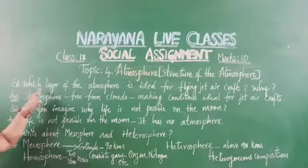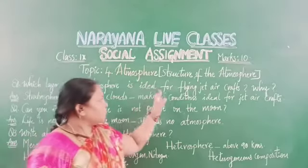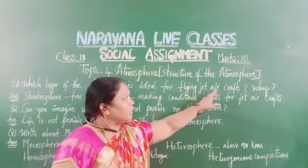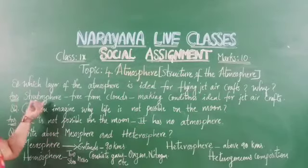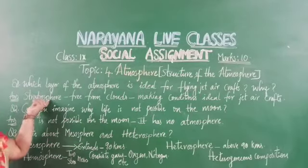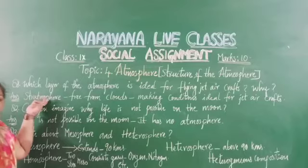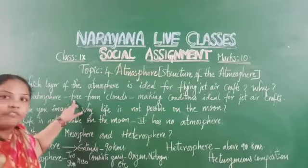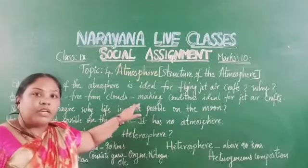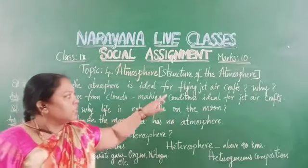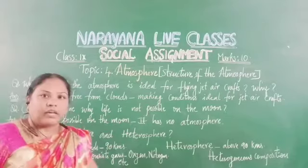Our first question is: which layer of the atmosphere is ideal for flying jet aircrafts, and why? The answer is the stratosphere. Stratosphere is one of the layers of the atmosphere which is free from clouds, and that is the reason which makes the condition ideal for jet aircrafts.